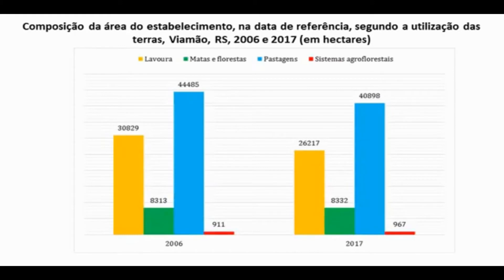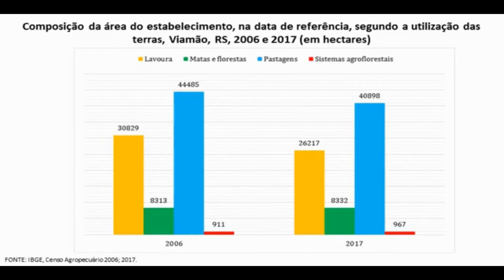Olhando um pouco para o cenário rural, temos uma composição de áreas de estabelecimento comparando os dois últimos censos agropecuários do IBGE, 2006 e 2017. A maior parte das terras dos estabelecimentos rurais em Viamão é destinada para pastagens e, em seguida, para lavoura. Matas e florestas ocupam um patamar relativamente estável, e os sistemas agroflorestais apresentam uma pequena amostra de crescimento.